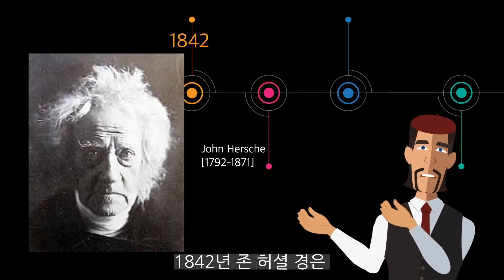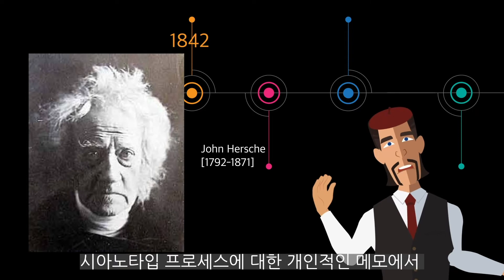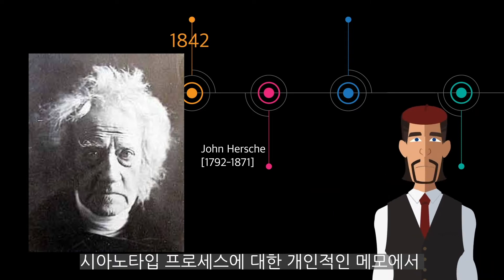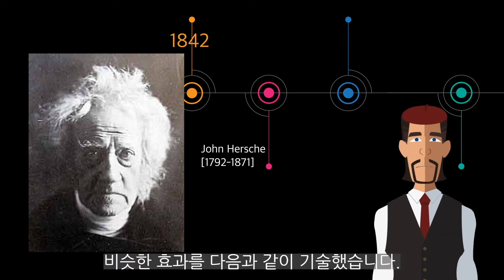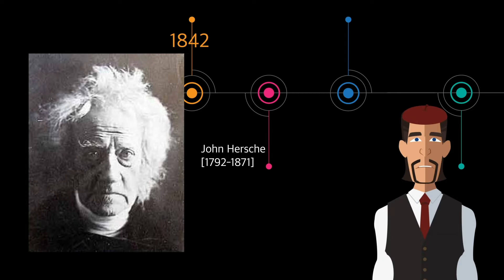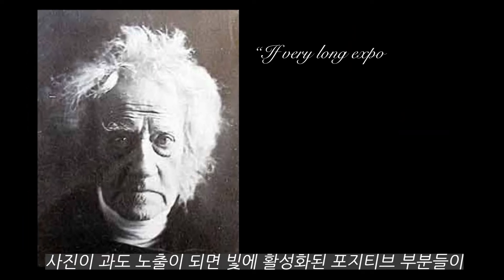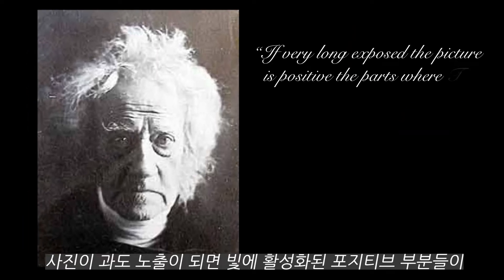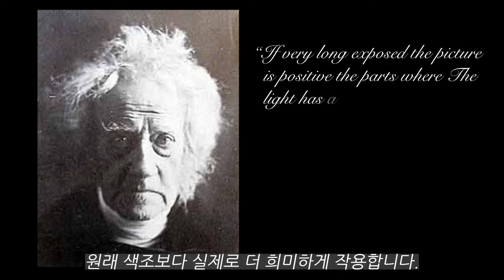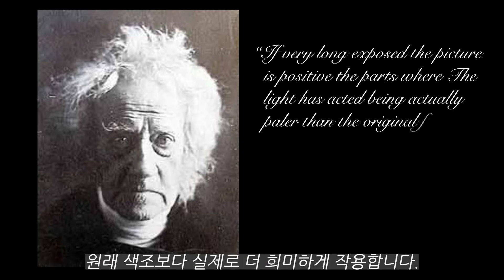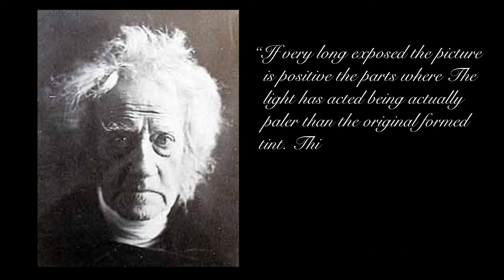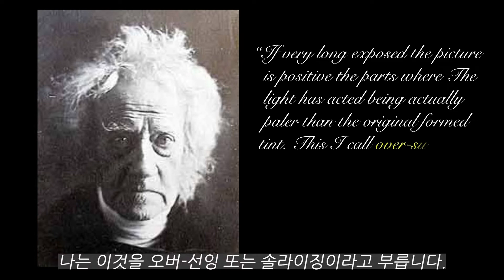Sir John Herschel described a similar effect in 1842 in his personal notes on the cyanotype process: "If very long exposed, the picture is positive, the parts where the light has acted being actually paler than the original foam tint. This I call over-sunning, or solarizing."